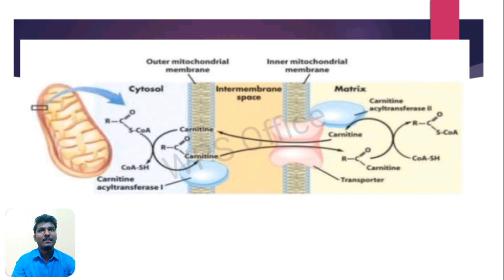The breakdown of fatty acid to acetyl coenzyme A is called Beta Oxidation of Fatty Acids. It occurs in mitochondria and this process is strictly aerobic. After production, acetyl coenzyme A is fed directly into the Krebs cycle. It occurs in many tissues including liver, kidney, and heart. Fatty acid oxidation does not occur in the brain.